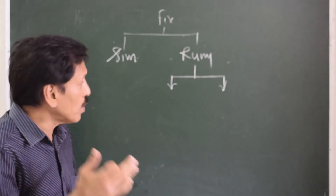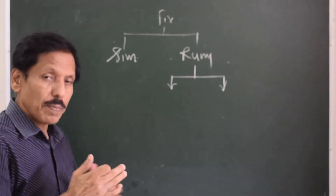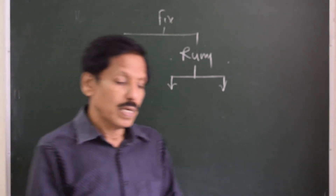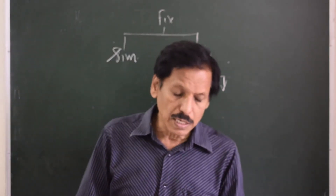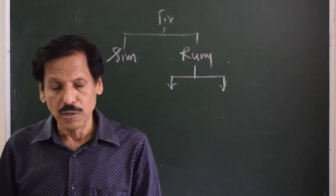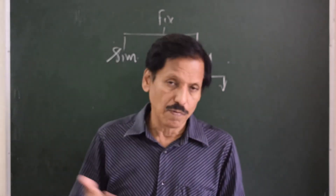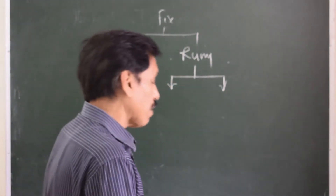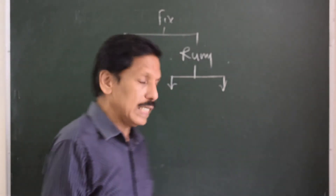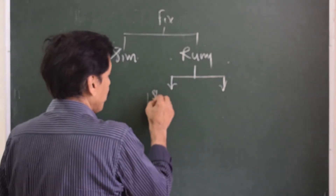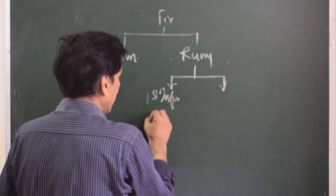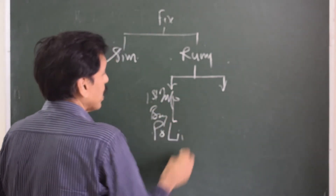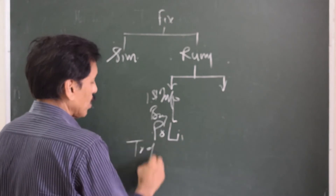Out of the two informations which are separated by time and distance — for example, one bearing is taken at 8 o'clock and another information is available at 9 o'clock — if the first information is a bearing line or position line, then it is called transfer of position line.